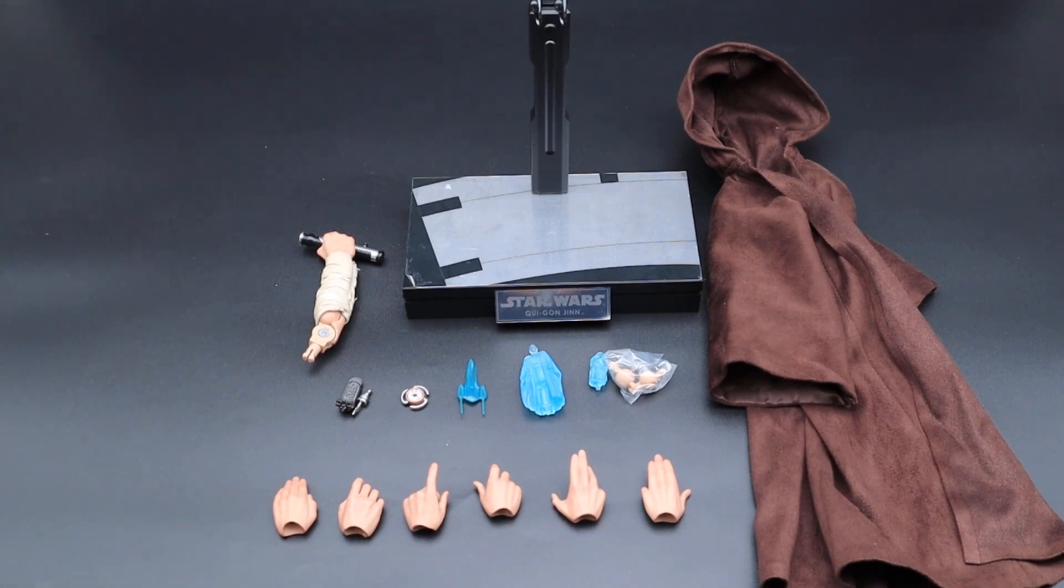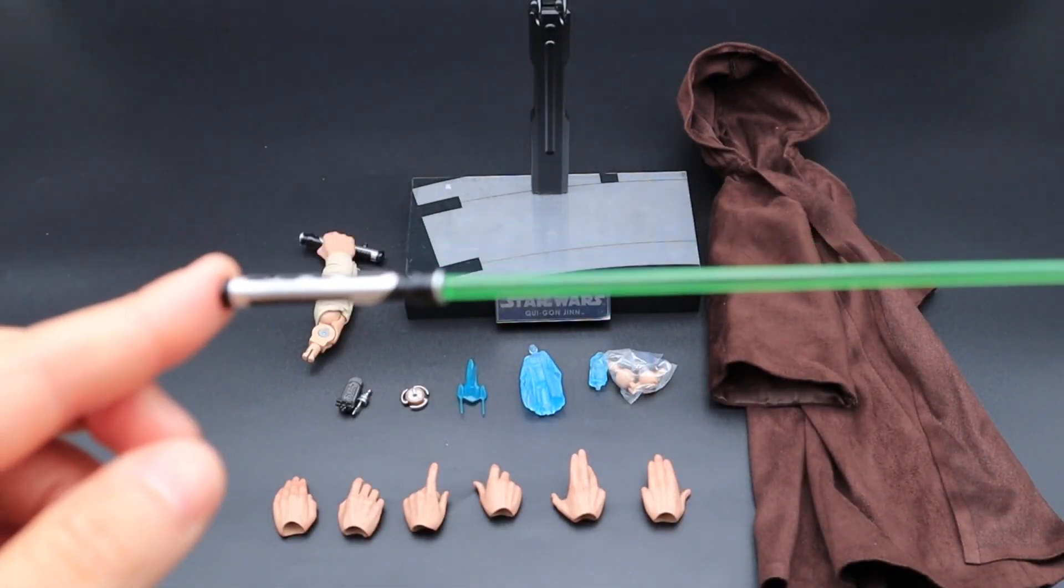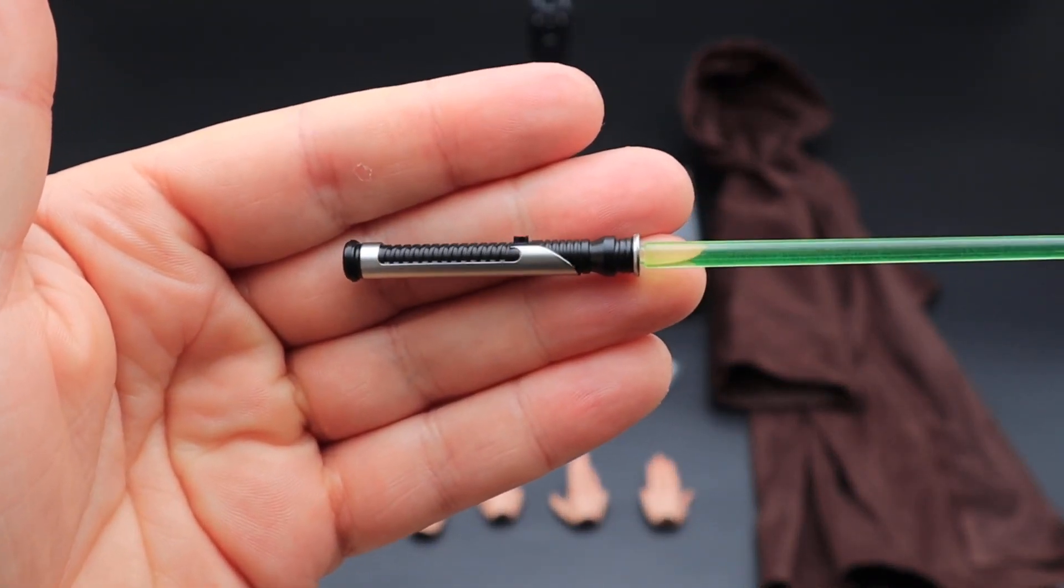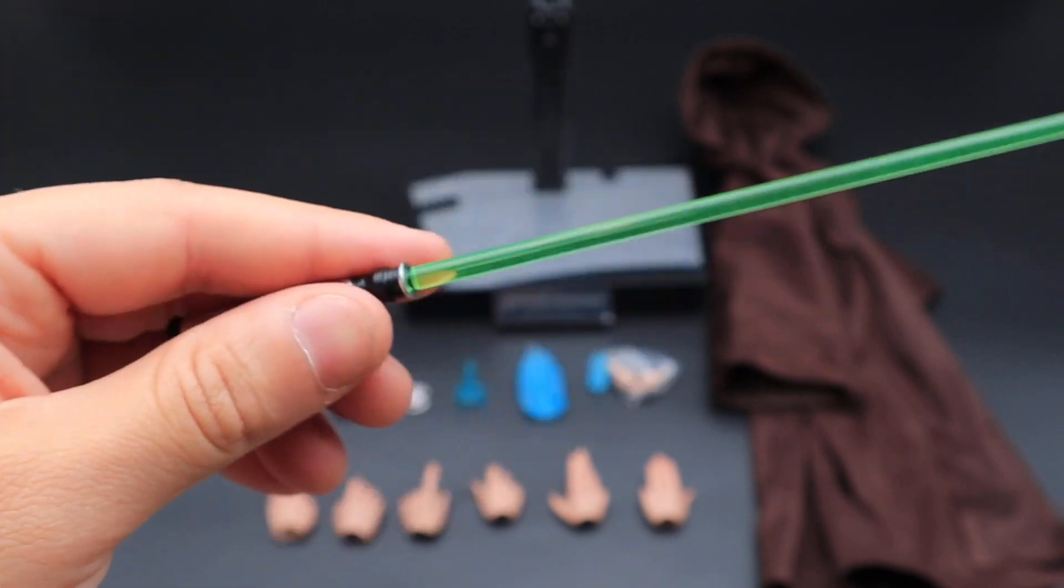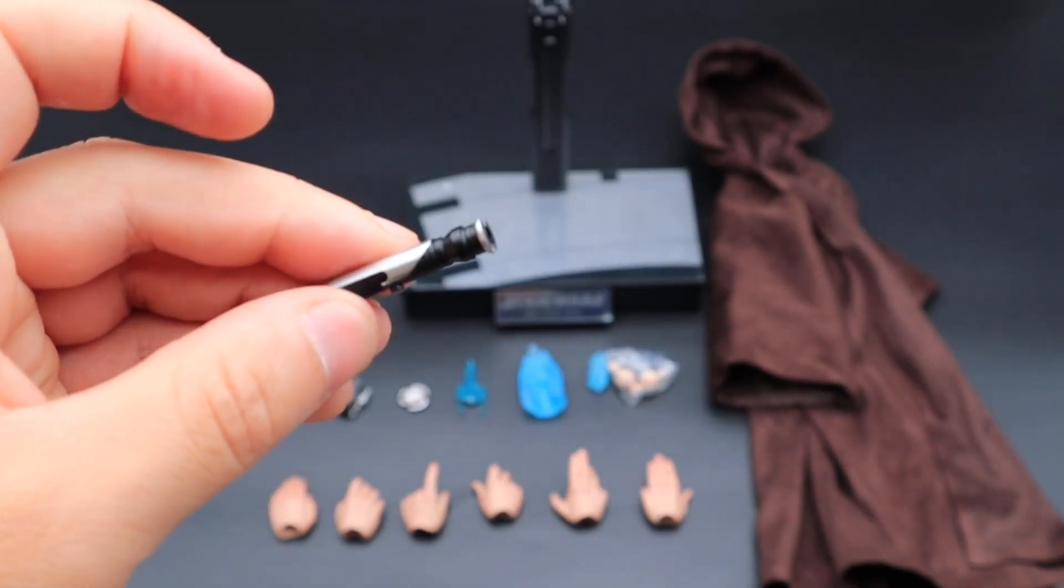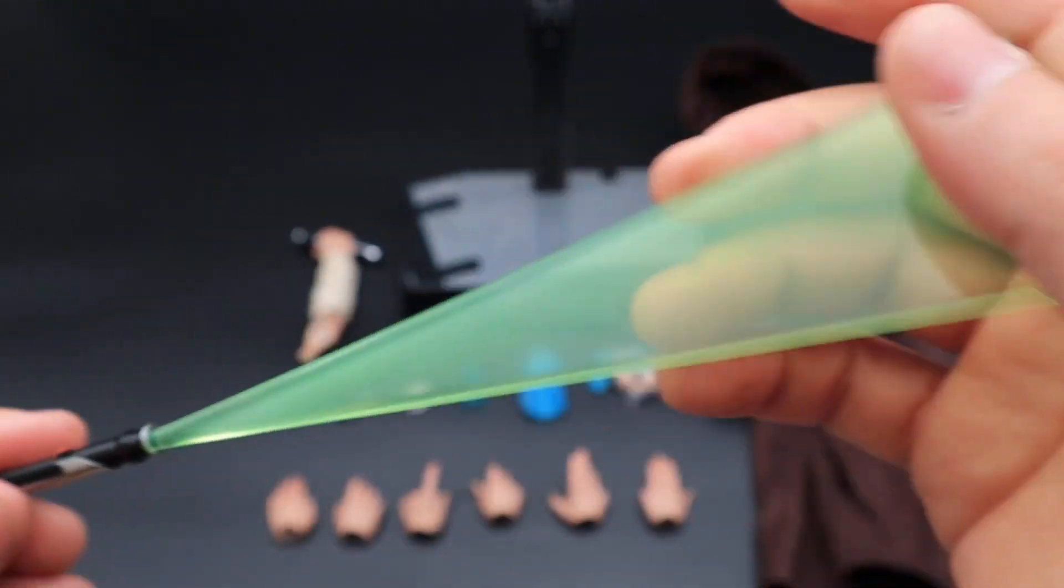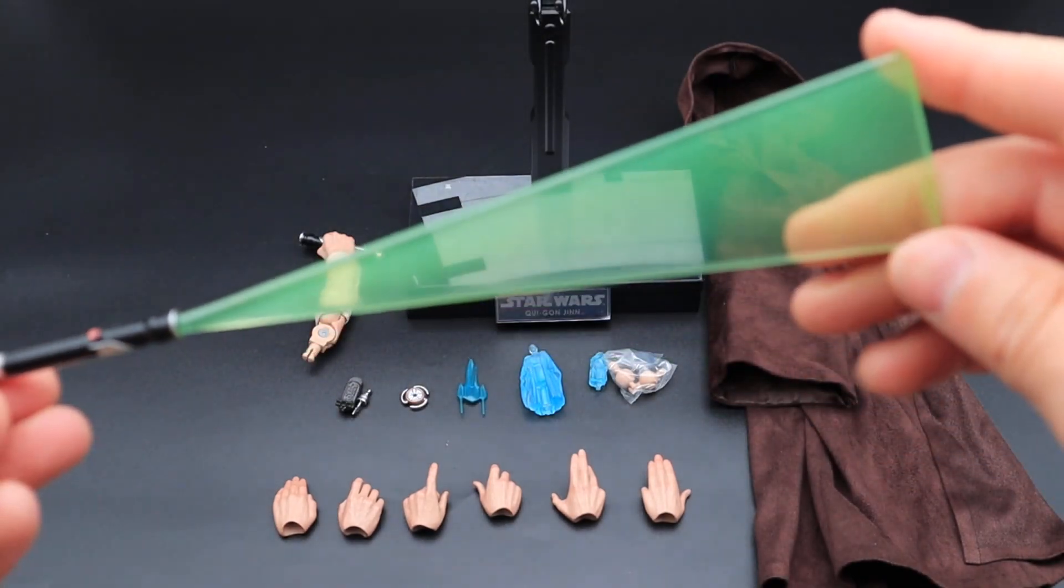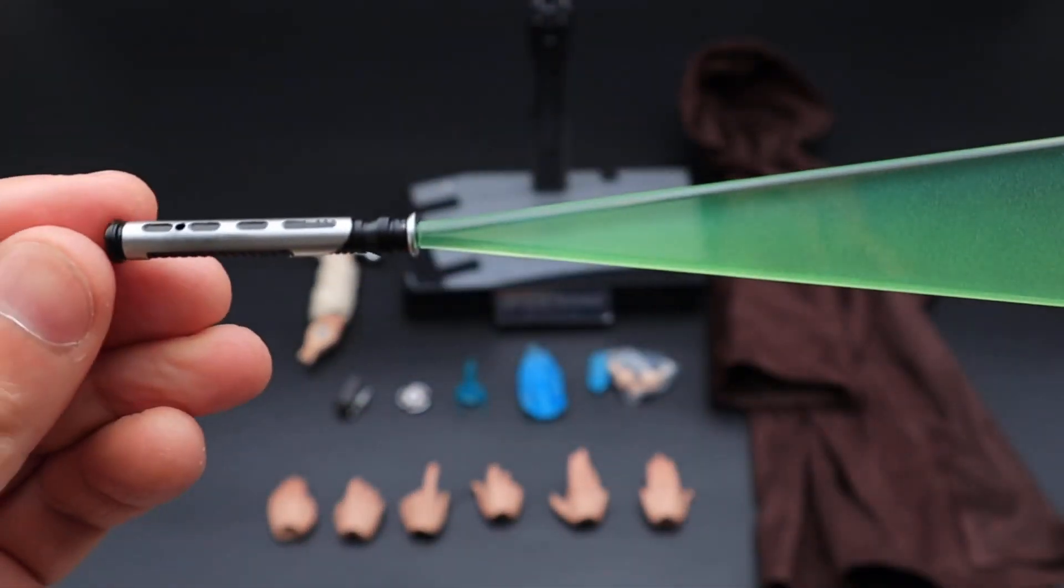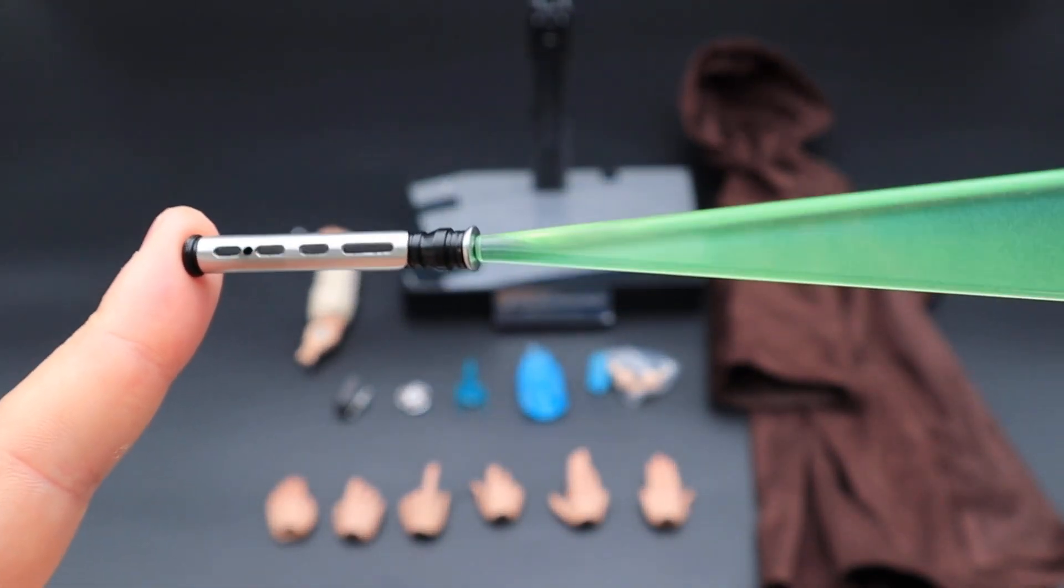Then you get the lightsaber loose. And again, very nicely detailed. This green blade does pop off, and then you can put the action blade in there as well. Pretty nice. I like the design of this lightsaber - very sleek, simple and sleek.